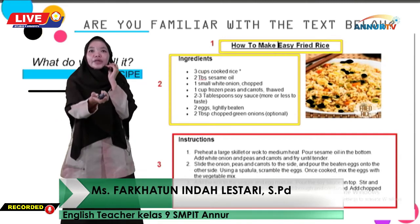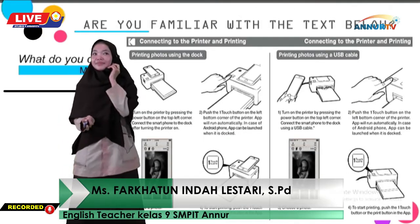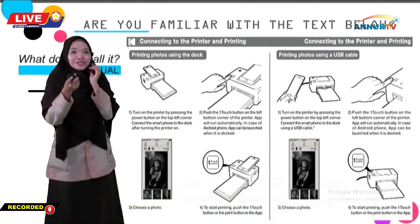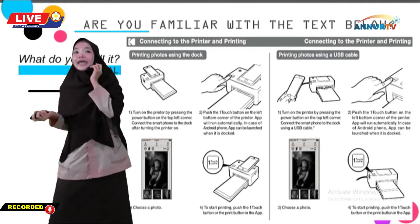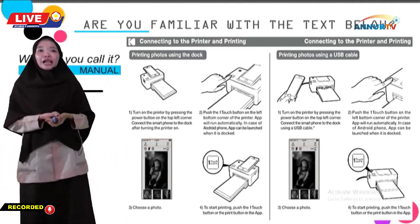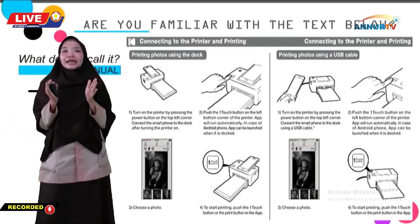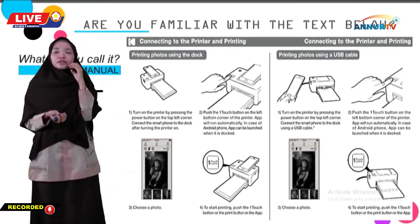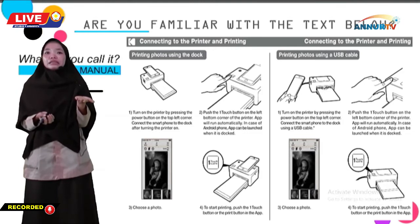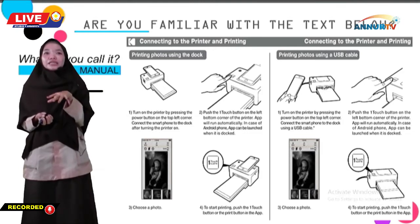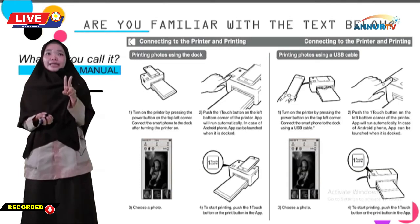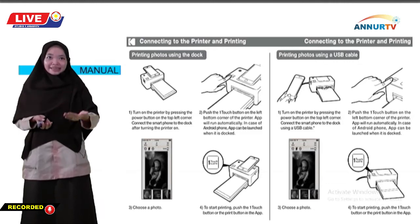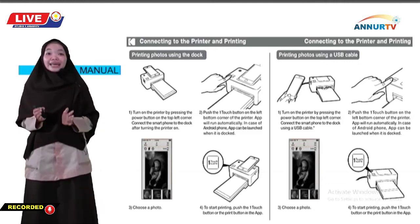What about this one? Do you know what it is? Are you familiar with this text? You are right — you can call it a manual. A manual is a text that tells the reader how to use something. You can see in the picture there is an image of a printer with its steps. These two texts — manual and recipe — are examples of procedure text.